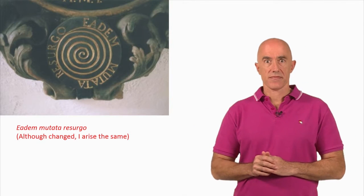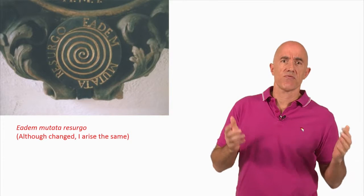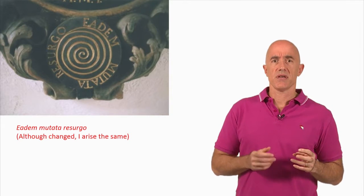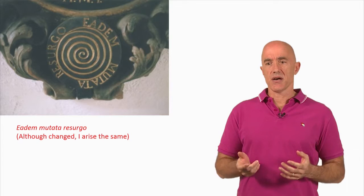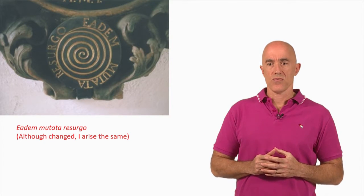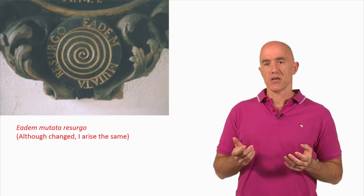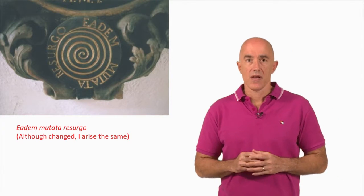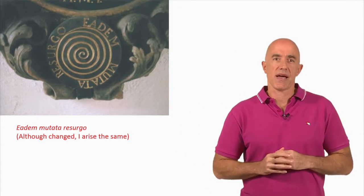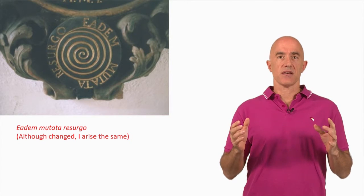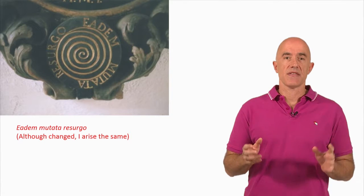Now, if you look at the bottom of this tombstone, you can see a spiral. Jacob Bernoulli had requested that a logarithmic spiral be engraved on his tombstone, together with the inscription 'Eadem Mutata Resurgo,' which translates as 'although changed, I arise the same' — referring to both the logarithmic spiral's invariance under different magnifications, as well as the hope for resurrection of the dead at the end of the world.